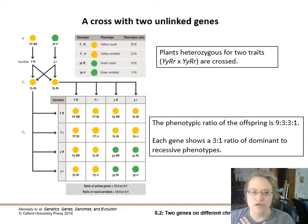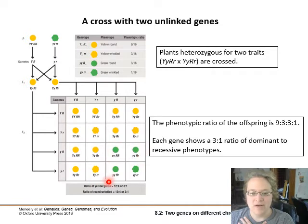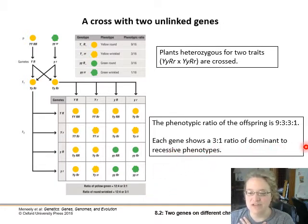Combining the two traits gives us the 9:3:3:1 ratio. The 9 is yellow and smooth — overwhelmingly the most common. Then 3 that are yellow but wrinkled, 3 that are green but round, and 1 where both recessive traits show up. But if you look at each gene separately, each gene is still behaving according to that simple Mendelian dominance ratio.